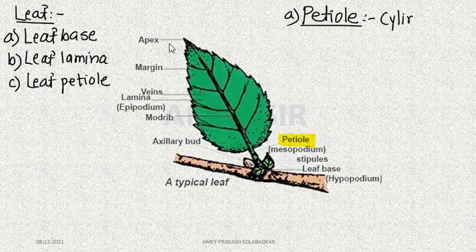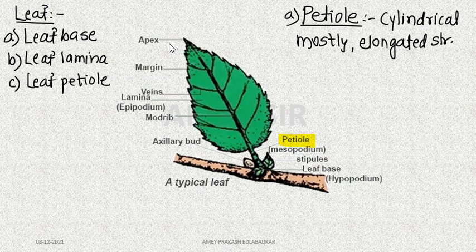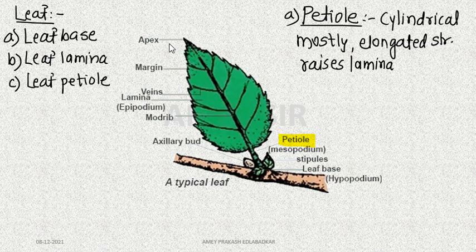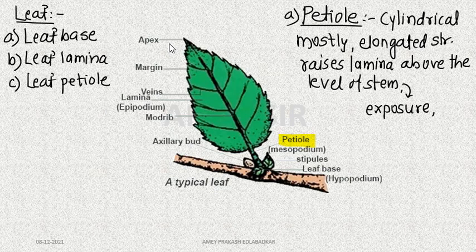The petiole is a cylindrical — and sometimes flattened — elongated structure. What does it do? It raises the lamina above the level of the stem, slightly exposing it. From a photosynthesis point of view, the petiole lifts the lamina upward to maximize light exposure.